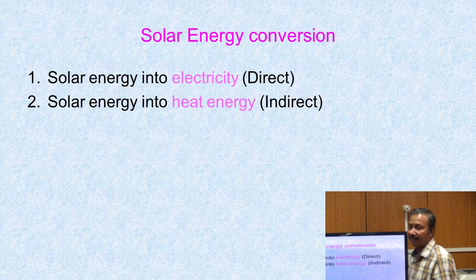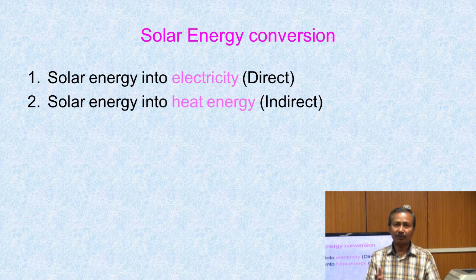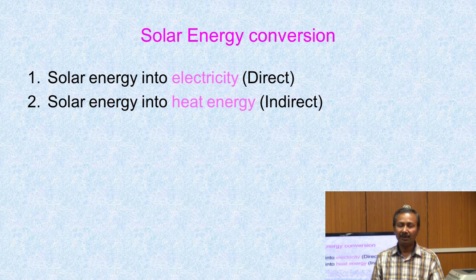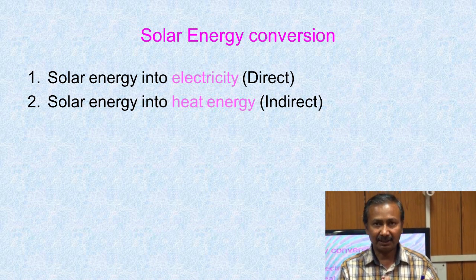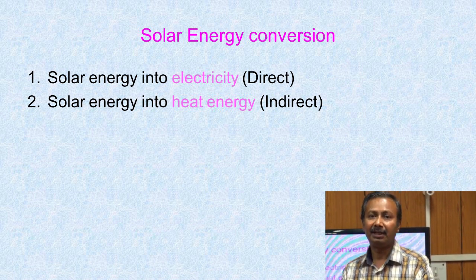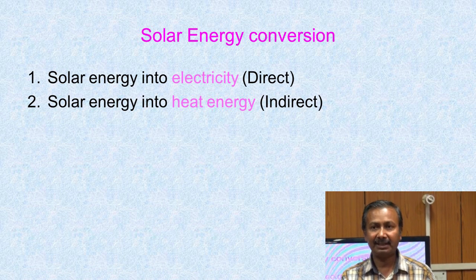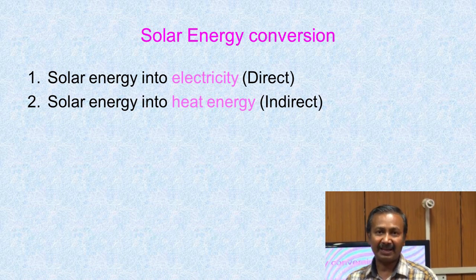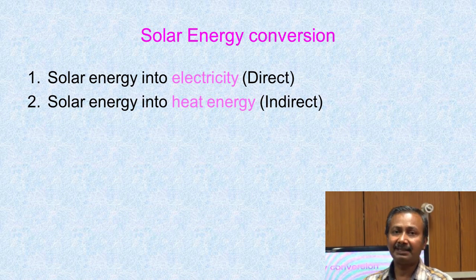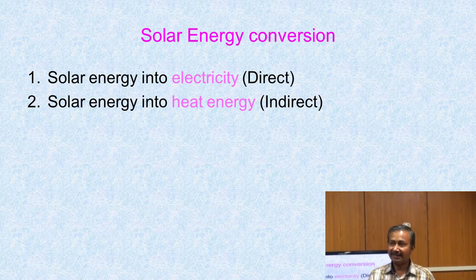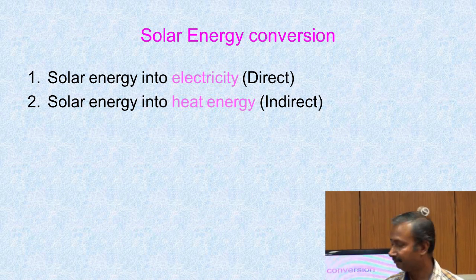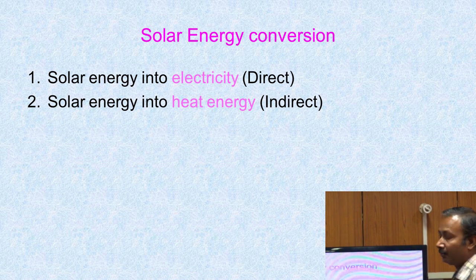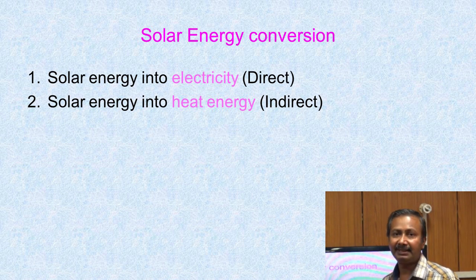Coming to solar energy conversion: the principle is how solar energy can be converted into useful form. There are two principles. One is conversion of solar energy into heat energy, and another is conversion of solar energy into electricity, which is the direct method. Conversion of solar energy into heat energy is the indirect method. With certain techniques we can trap solar radiation and convert it into heat energy. These two principles will be focused in detail in subsequent classes.